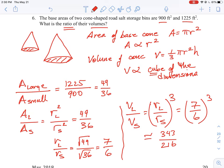So that is the ratio of the volumes. It is 343 to 216. The final answer for this question, if we're doing large to small, is 343 over 216.